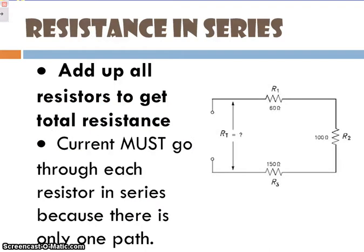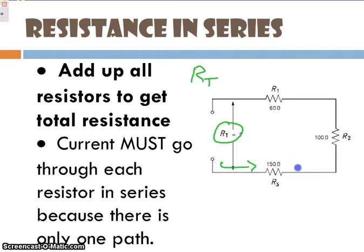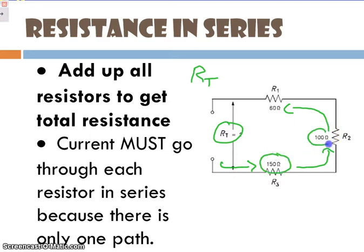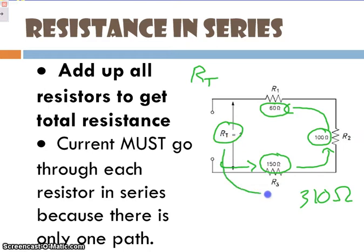If we look at resistance in a series circuit, we can calculate what we call total resistance, or RT. The reason you can do that is because the electrons all have to take the same path, so we can look at this as a giant resistor. If I wanted to find the total resistance of this circuit right here, it would be 150 ohms plus 100 ohms plus 60 ohms, which comes out to 310 ohms. That would be our total resistance for this circuit.